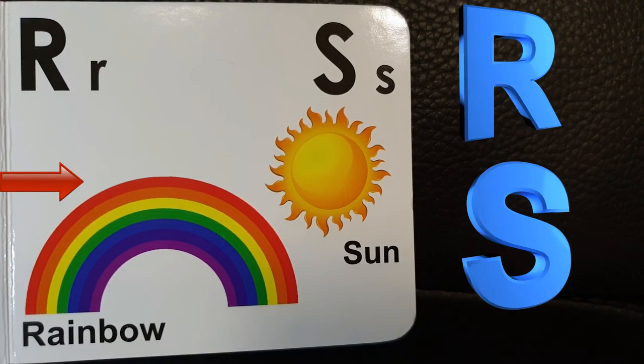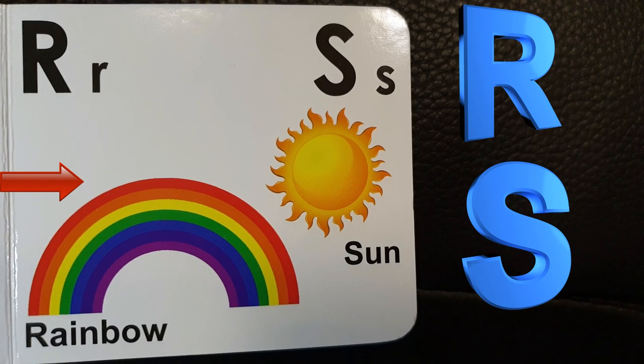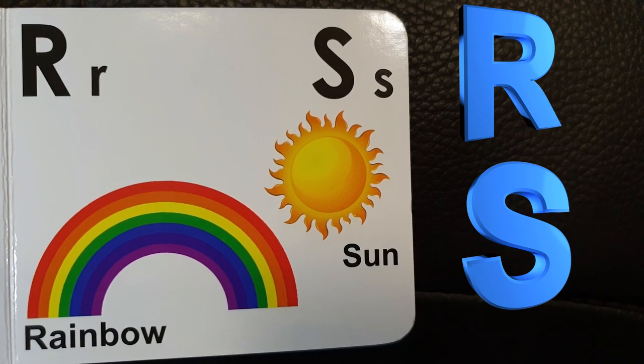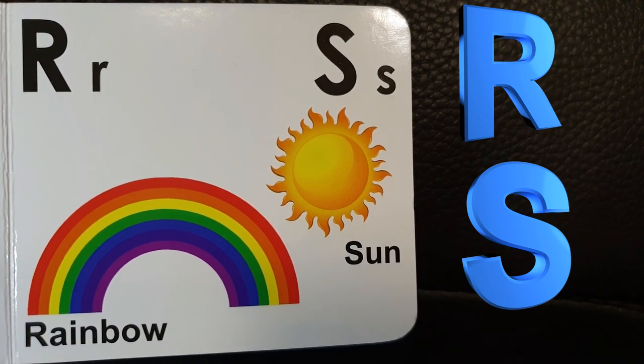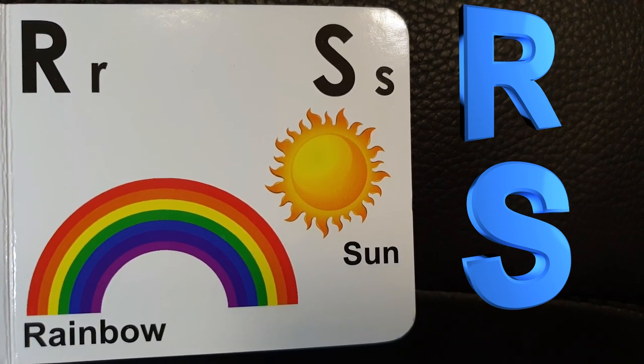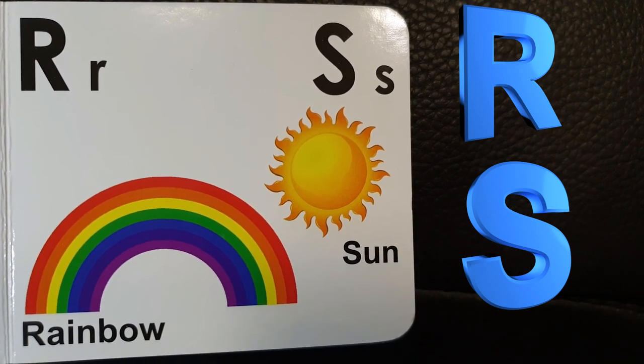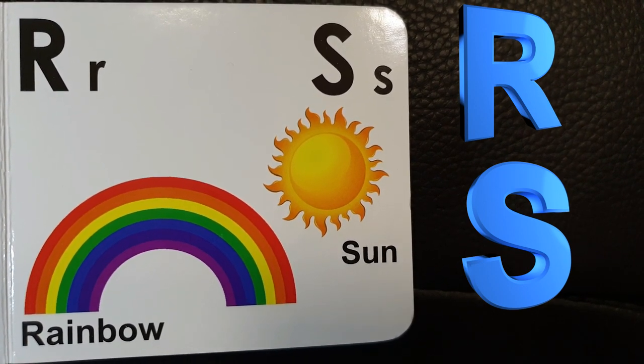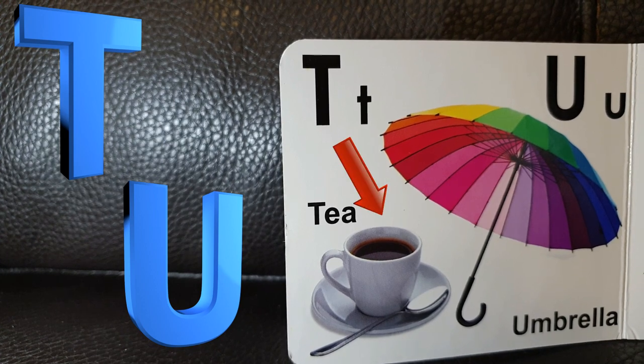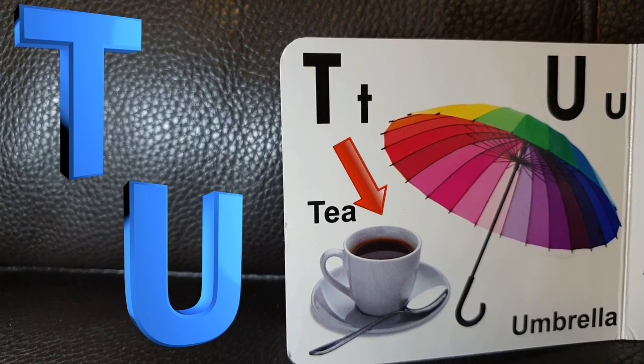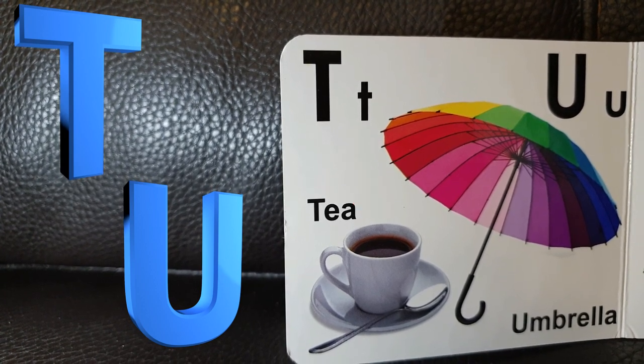R is for rainbow, r-r-rainbow. S is for sun, sun. T is for tea, t-t-t.